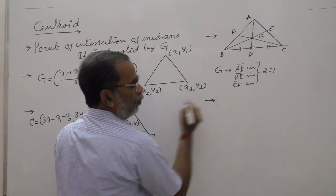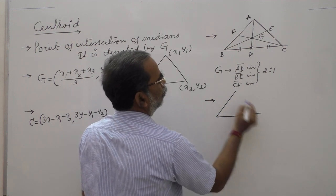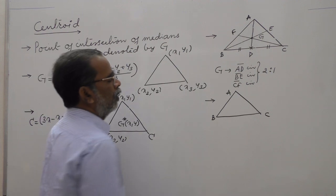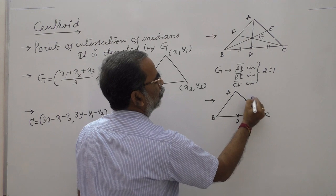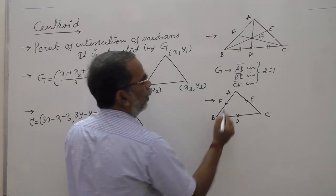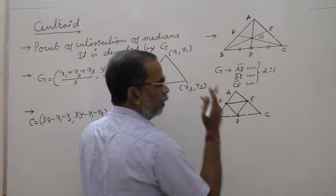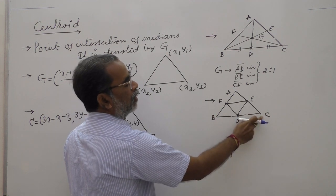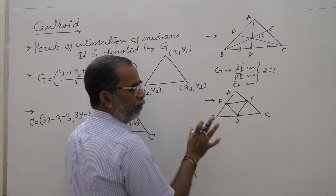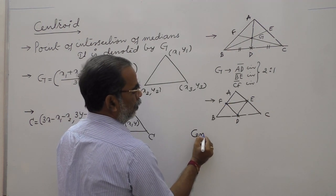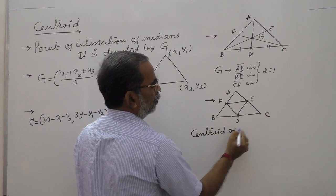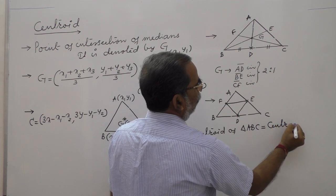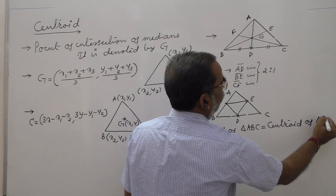If ABC is a triangle and DEF are the midpoints of its three sides, and you join the midpoints to form triangle DEF, then the centroid of triangle ABC is the same as the centroid of triangle DEF — the triangle formed by joining the midpoints.